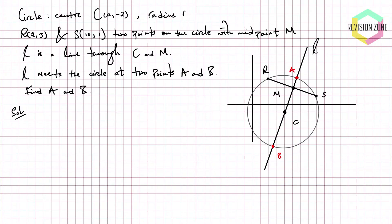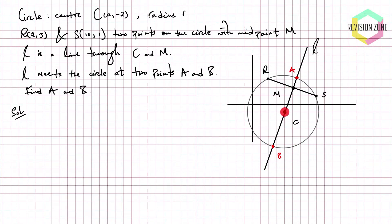We see that our point R is at (2, 3), so it's going to be sort of slightly to the right and a bit high, and then S is (10, 1), so it's going to be more to the right and slightly not as high. M is the midpoint of R and S, so we have that there. The line L passes through the centre of the circle and M, so we have L here. L is crossing our circle at two points A and B, and that's what we need to figure out.